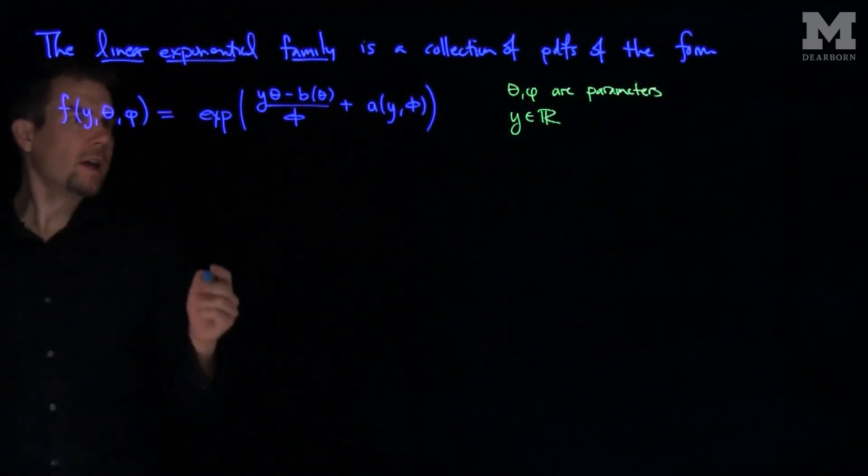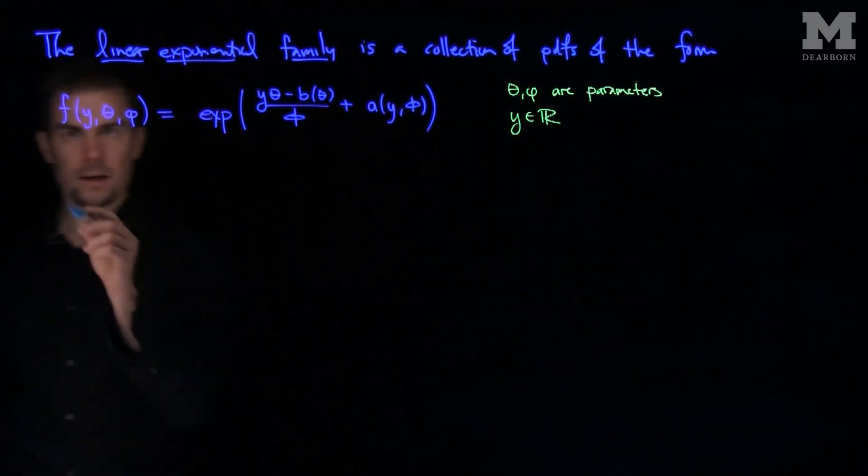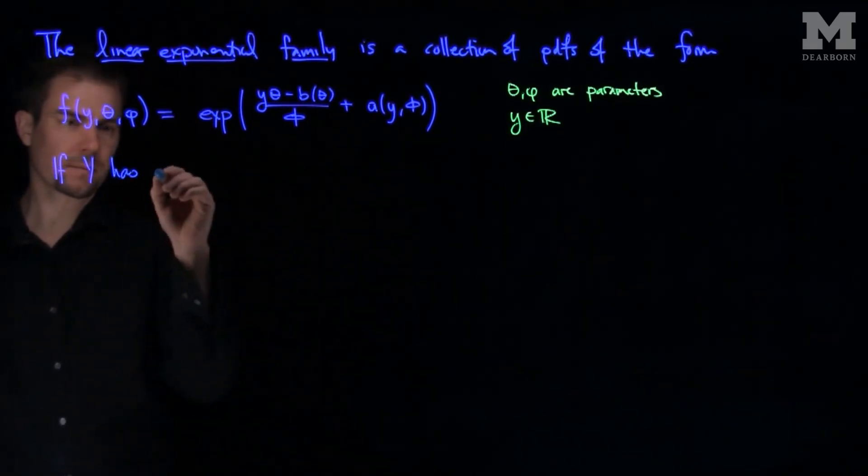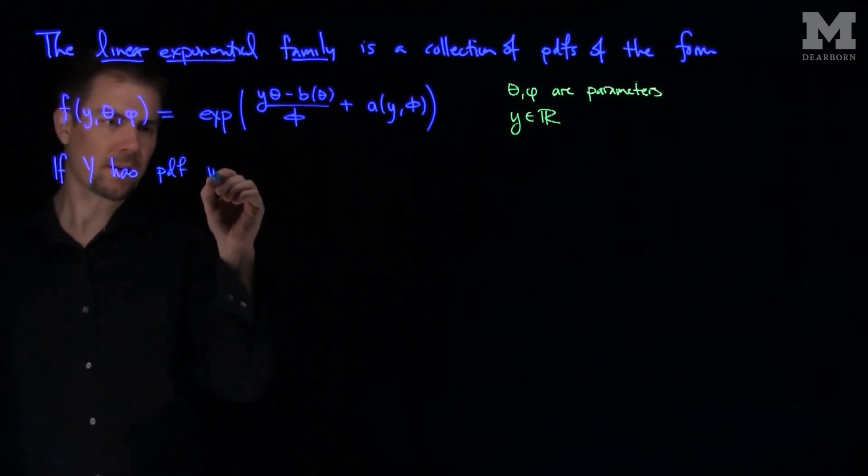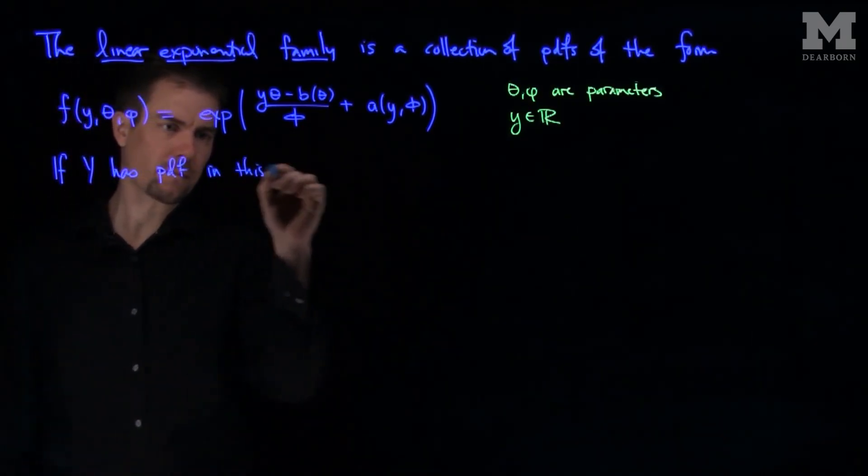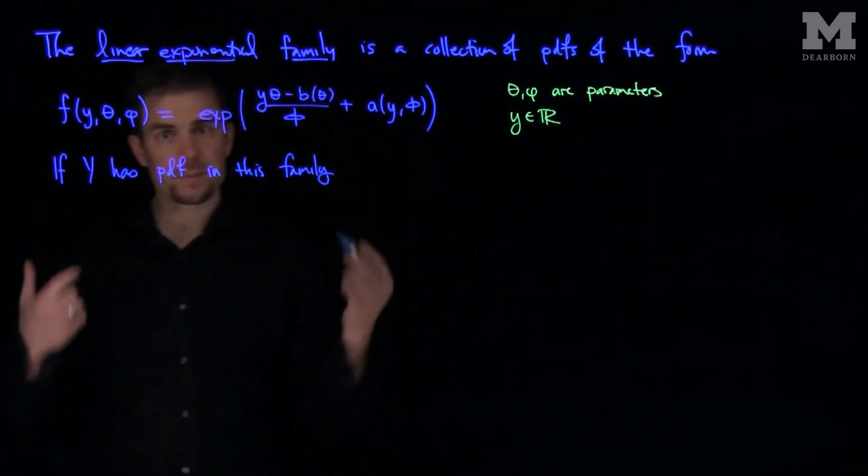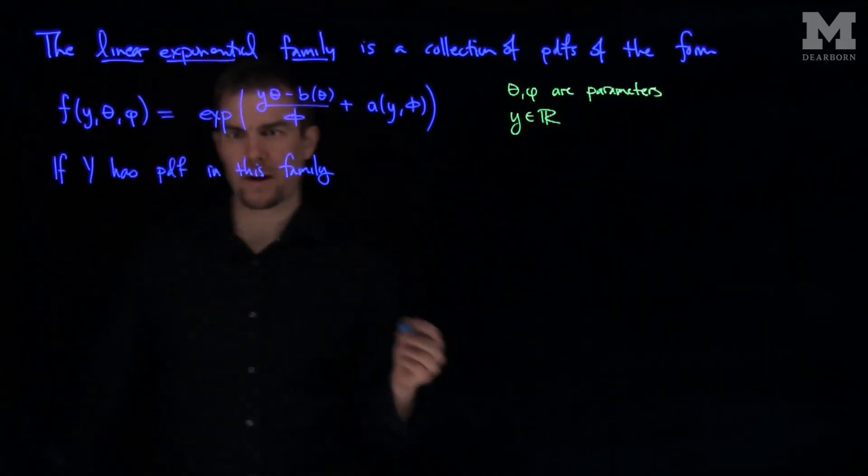If a random variable Y has PDF in this family, then we can compute its expected value and variance using the following fact.